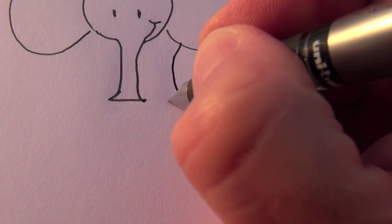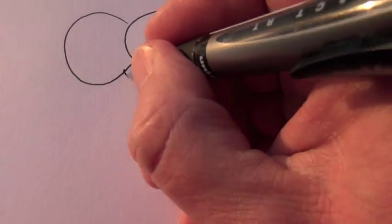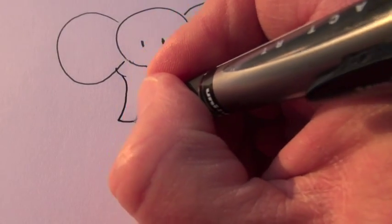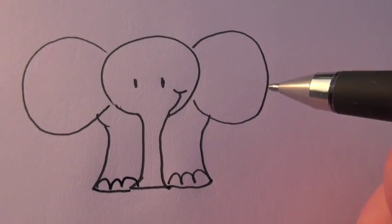And we're going to draw the legs: one, two, three. Another leg: one, two, three. And we've got our elephant!